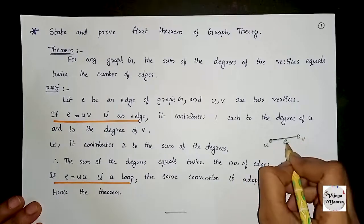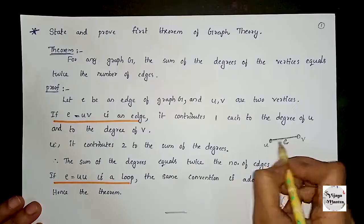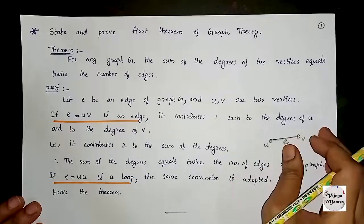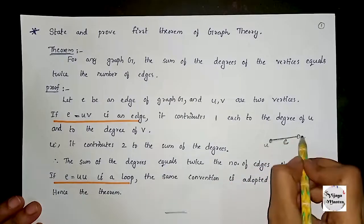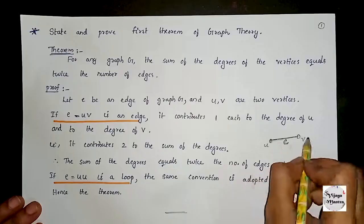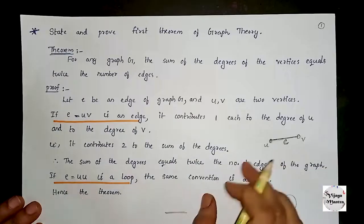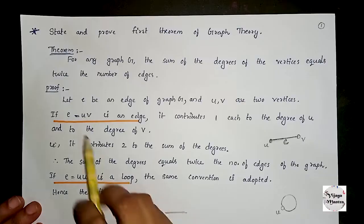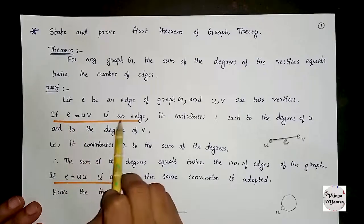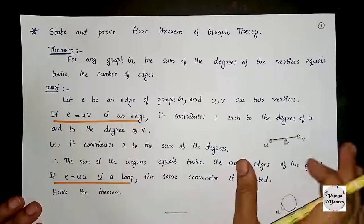There are two cases. The first case is u, v is an edge where u and v are different vertices.